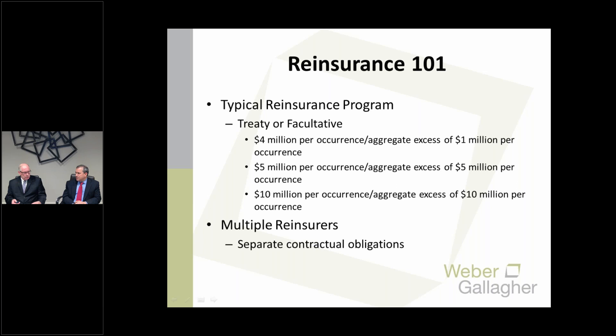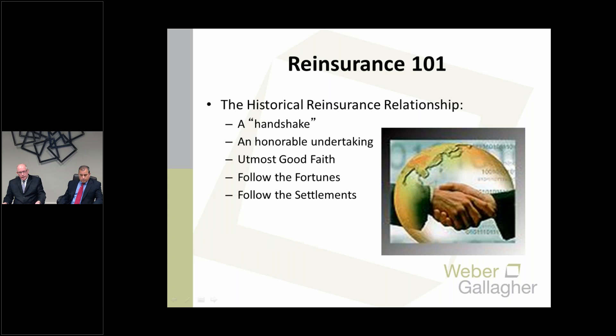While mentioning contracts, reinsurance agreements are not really comparable to the typical insurance policy that you may be familiar with, which are typically much more heavily regulated and have to be filed with state authorities. Reinsurance is a much different animal. A reinsurance treaty could be 30 to 40 pages long; a facultative slip could be just a page or two — very different from an insurance policy.